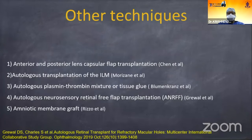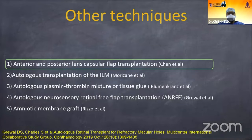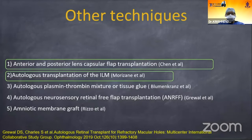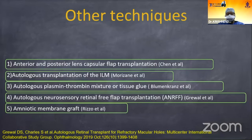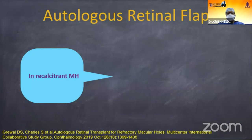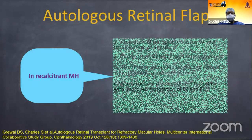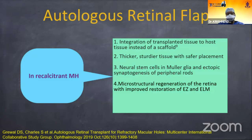Other techniques to close the macular hole in myopic patients include transplanting the anterior or posterior lens capsule into the macular hole, using a free ILM flap to plug the macular hole, a retinal free flap using retinal tissue taken from the other side placed inside the macular hole, or amniotic membrane grafting. When we fail to close the macular hole in a myopic patient, the autologous retinal flap is often useful.